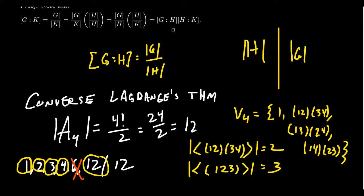But search as you might, it is impossible to construct a subgroup of order 6 inside A₄. Although 6 is a divisor of 12, there is no subgroup of A₄ of order 6. The way to see this is you'd have to take a group containing a 3-cycle and a 2-2 cycle, but any such subgroup actually generates the whole group — so when you try to get order 6, you actually get 12. Therefore, the converse of Lagrange's Theorem does not hold in general.